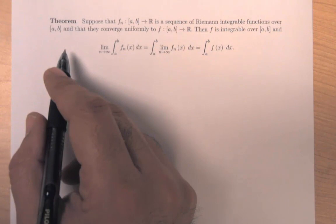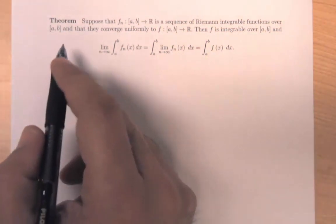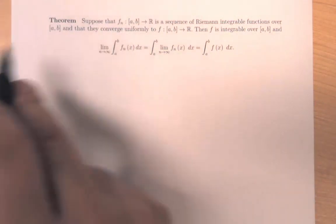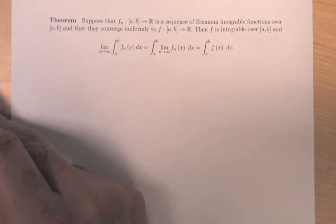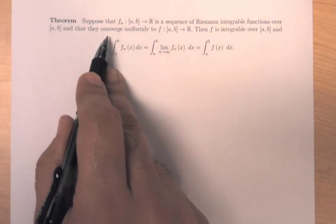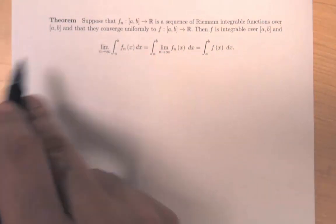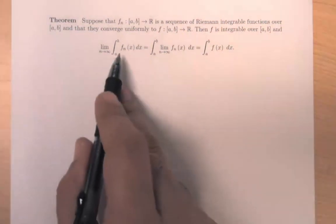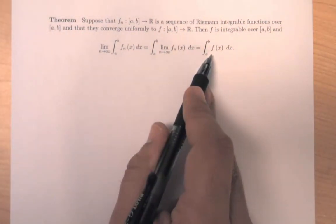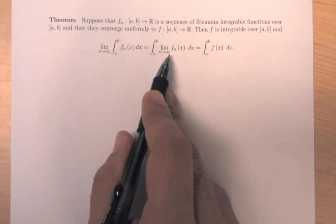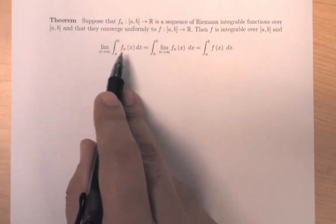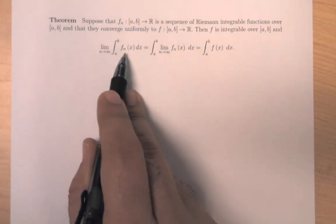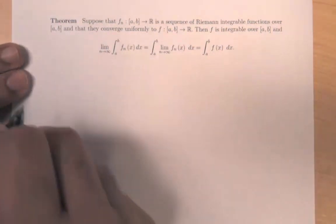Our next theorem is on the integrability of a sequence of functions when they converge. Suppose f_n is a sequence of Riemann integrable functions that converge uniformly to f. Then we can conclude that f is integrable, and the integral of f(x) equals the limit of the integrals of f_n(x). Let's prove this result.